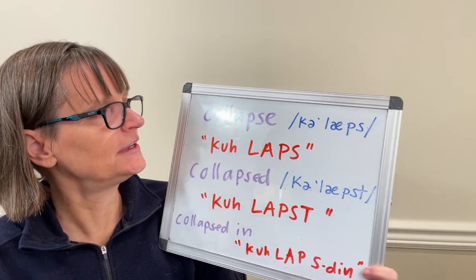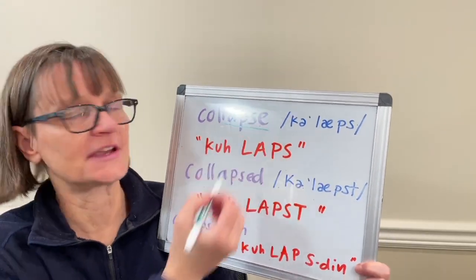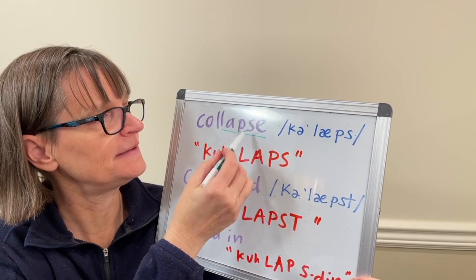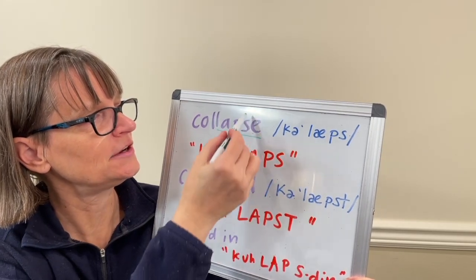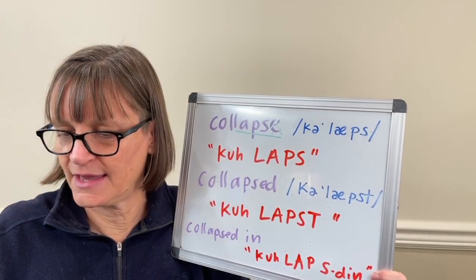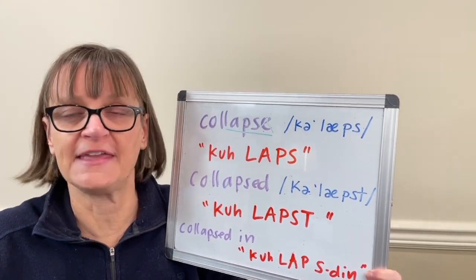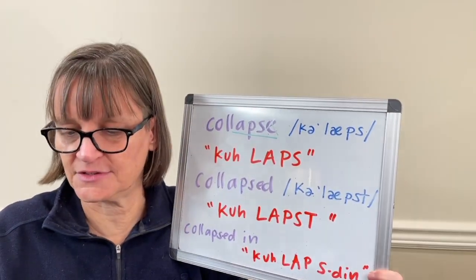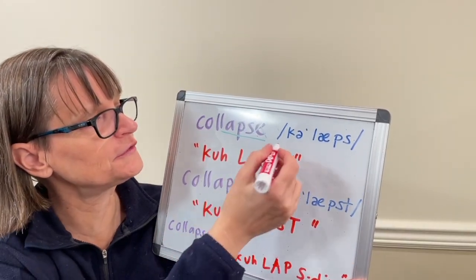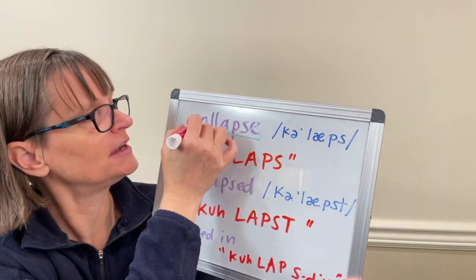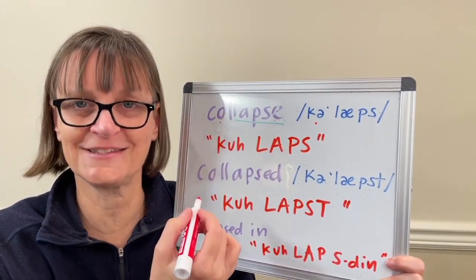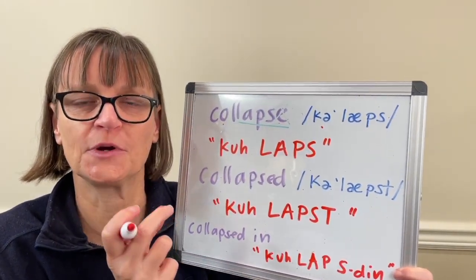In the word collapse, our stress is on the second syllable: lapse. And even though we have an SE here, the E is silent in collapse — we just have the A, P, and S sounds in this word. Because the first syllable is unstressed, the letter O is going to say the schwa or 'uh' sound, and it's going to be really short.